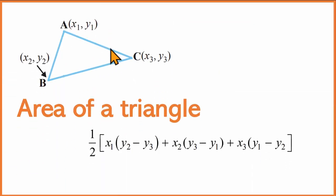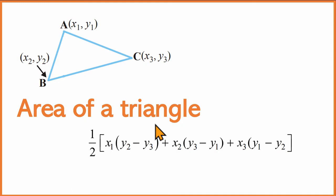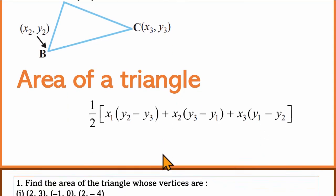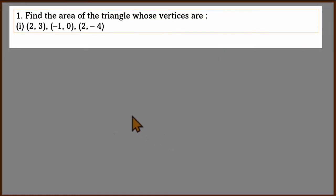This area of triangle formula involves a triangle with vertices A, B, C. If we use this formula, we will continue to use the area of the triangle formula. This is the first question — the formula value substitute. The question is: find the area of the triangle. The triangle has given vertices.